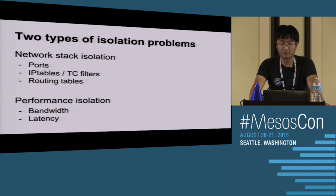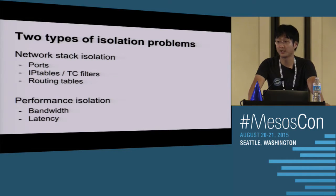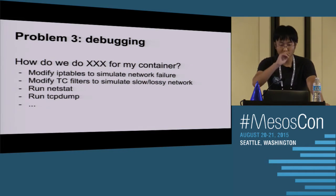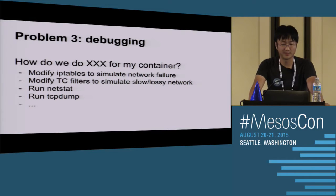The isolation problem can be classified into two major categories. The first I call 'network stack isolation' - people want separate ports, IP tables, TC filters, and routing tables for their containers. The other is 'performance isolation' - bandwidth isolation and latency isolation. The third problem is debugging. We'd get questions like 'how do I modify the IP table to simulate network failures, or modify TC filter to simulate a slow network, or run tcpdump just for my containers, not all the other host services?'